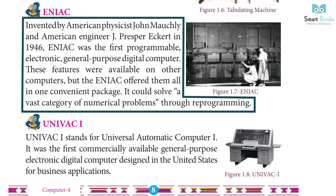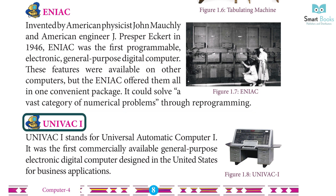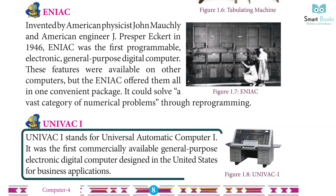ENIAC was the first programmable electronic general-purpose digital computer. These features were available on other computers, but ENIAC offered them all in one convenient package. It could solve a vast category of numerical problems through pre-programming. UNIVAC I stands for Universal Automatic Computer I. It was the first commercially available general-purpose electronic digital computer designed in the United States for business applications.